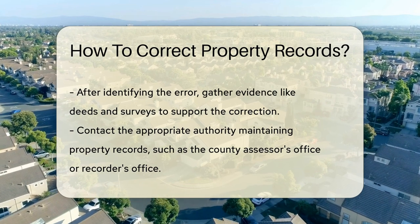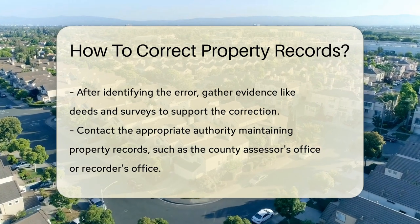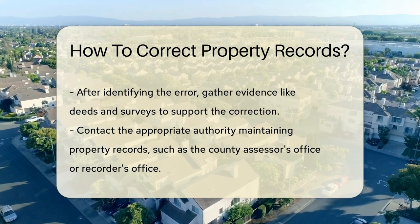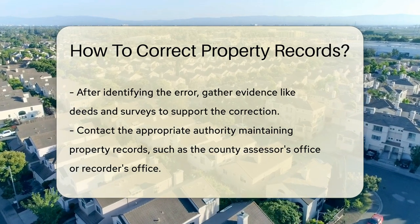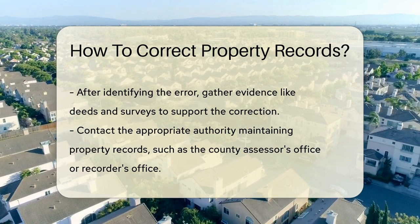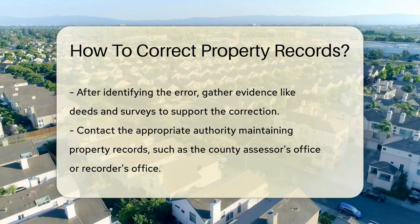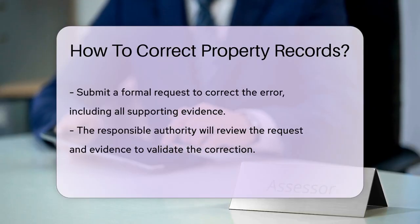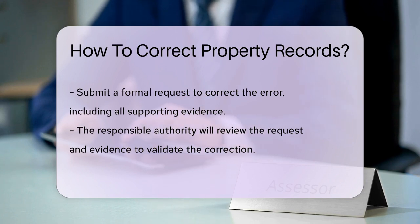After gathering the necessary evidence, you should contact the appropriate authority responsible for maintaining property records in your area. This could be the county assessor's office, recorder's office, or another relevant agency. Submit a formal request to correct the error, including the supporting evidence you have gathered. The authority will review your request and the evidence provided to determine the validity of the correction.